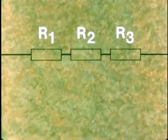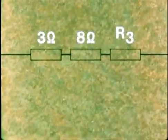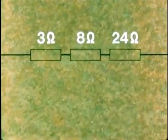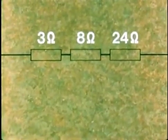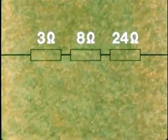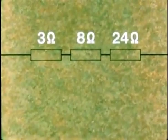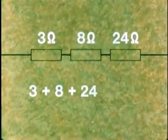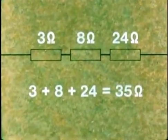Suppose these three resistors are 3 ohms, 8 ohms, and 24 ohms. What do you think RT, the total resistance would be? Most people would say 35 ohms. That's 3 plus 8 plus 24, 35 ohms, and they'd be right.